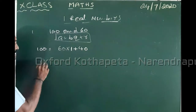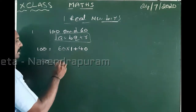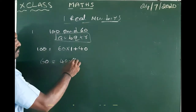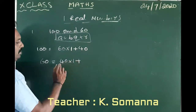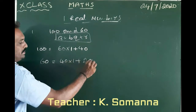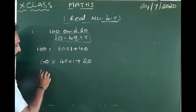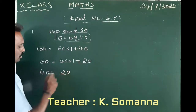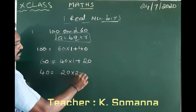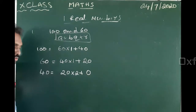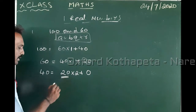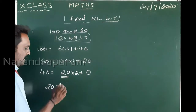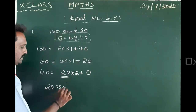For example: 60 divided by 40 — one time, plus remainder 40. Then subtract: remainder 20. Now 40 = 20 × 2, plus remainder 0. So, 20 is the HCF — the Highest Common Factor.